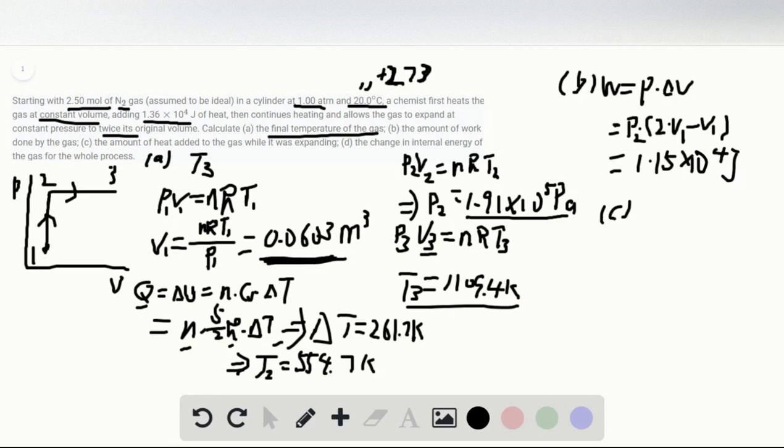In part C, we want to find the amount of heat added to the gas. To figure out this heat, we calculate the change in internal energy first. Delta U equals n times Cv times delta T. We already know the heat in process 1 to 2 is 1.36 times 10 to the fourth joules. Now we find the change in internal energy in process 2 to 3.